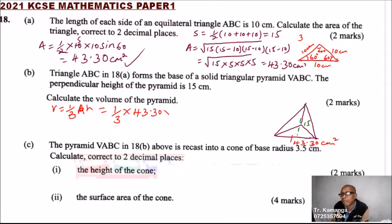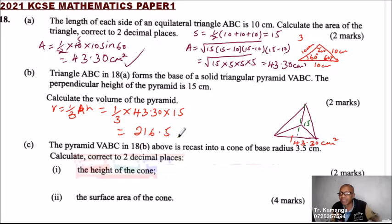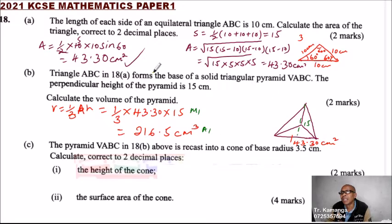Using your calculator: one third × 43.30 × 15 gives 216.5 centimeters cubed. That is the volume of the pyramid. You get two marks — one method mark and one answer mark.